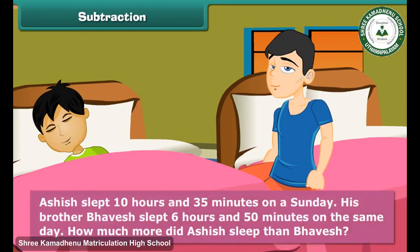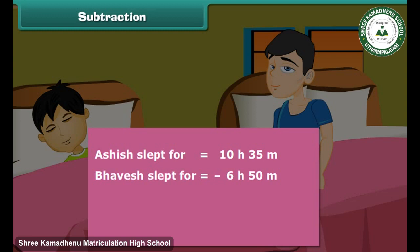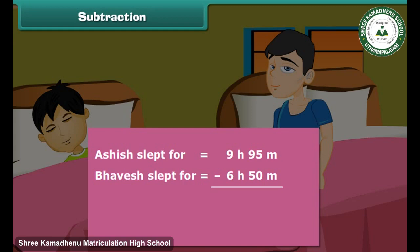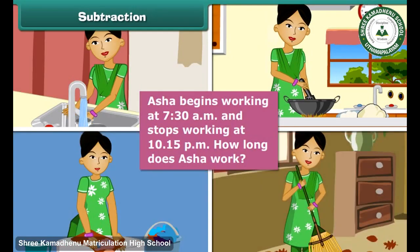Ashish slept 10 hours and 35 minutes on a Sunday. His brother Bhavesh slept 6 hours and 50 minutes on the same day. How much more did Ashish sleep than Bhavesh? Since we cannot subtract 50 from 35, we borrow an hour. We add 60 minutes and subtract 1 from hours, giving us 9 hours and 95 minutes. Now we can perform the subtraction. Therefore, Ashish slept 3 hours and 45 minutes more than Bhavesh.